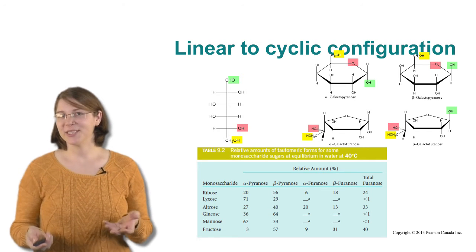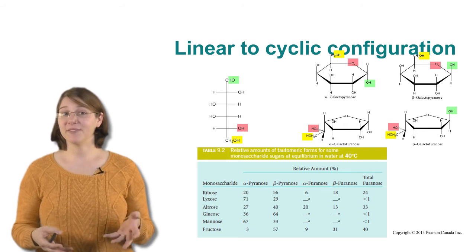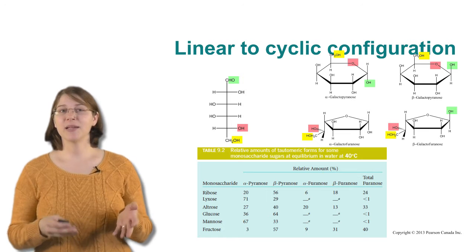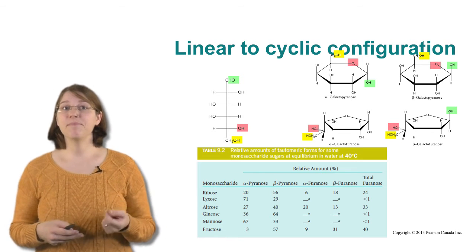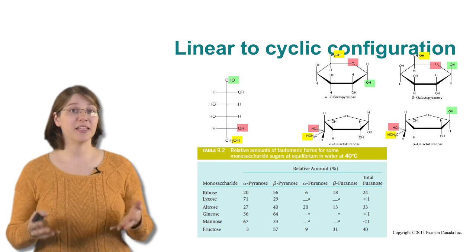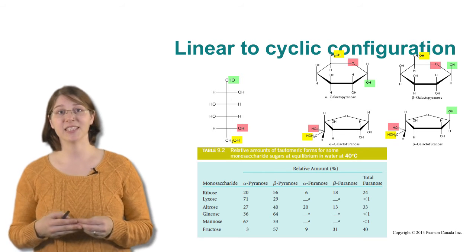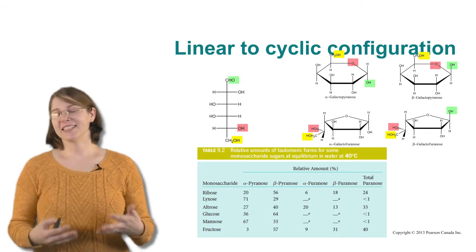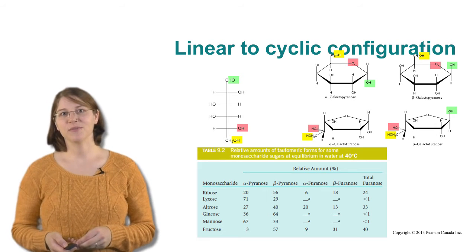The additional reason that this is really important is because ribose makes a part of our DNA and RNA, and the type of ribose that is in our DNA or RNA is the beta-furanose form of ribose, which you can see is not the most abundant naturally forming ribose cyclic sugar. And so we need enzymes to help us to make ribose into that beta-furanose form.